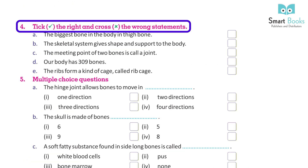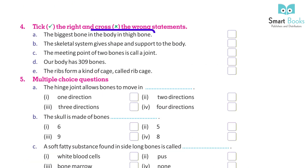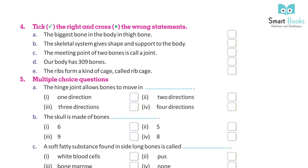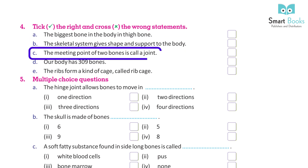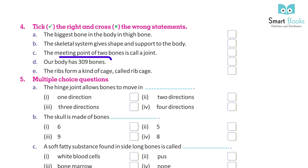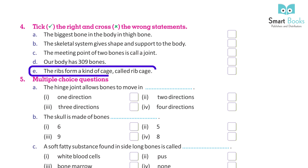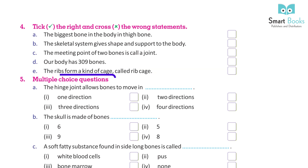Take the right and cross the wrong statements: A. The biggest bone in the body is the thigh bone. B. The skeletal system gives shape and support to the body. C. The meeting point of two bones is called a joint. D. Our body has 309 bones. E. The ribs form a kind of cage called the ribcage.